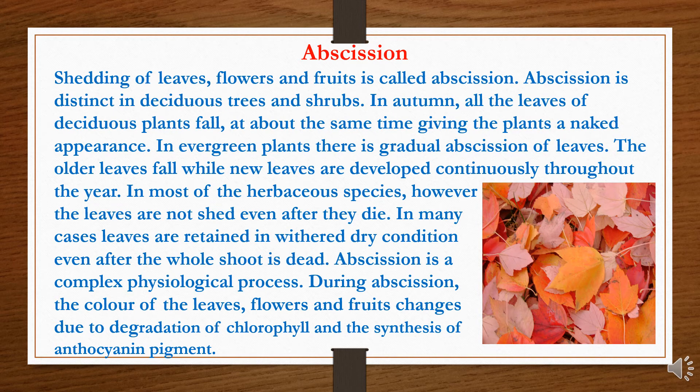We will now study about abscission. Shedding of leaves, flowers, and fruits is called abscission. Abscission is distinct in deciduous trees and shrubs. In autumn, all the leaves of deciduous plants fall at about the same time, giving the plants a naked appearance. In evergreen plants, there is a gradual abscission of leaves — older leaves fall while new leaves are developed continuously throughout the year. In most herbaceous species, however, the leaves are not shed even after they die, and in many cases leaves are retained under dry conditions even after the whole shoot is dead.